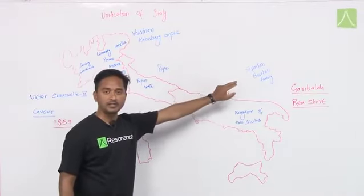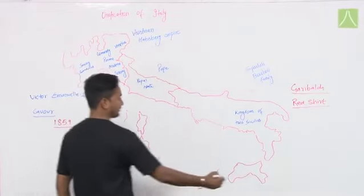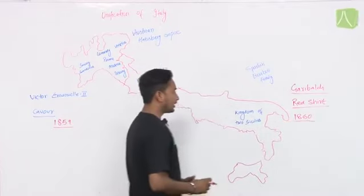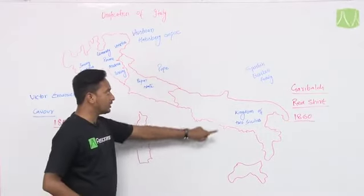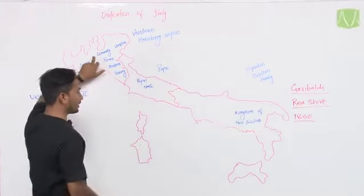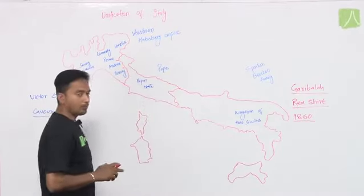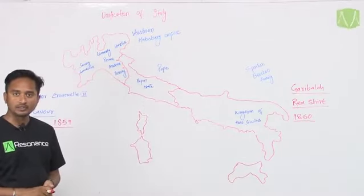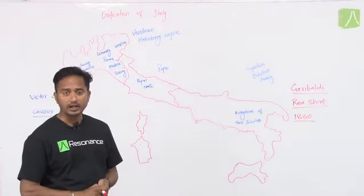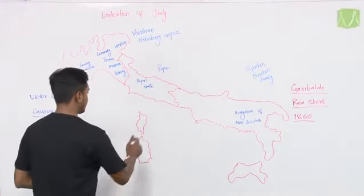The tribal army was raised against the Spanish Bourbon dynasty, and finally in 1860, the Pope made considerable efforts to save his empire, but the joint army of Giuseppe Garibaldi and others defeated the Pope's army in 1861.